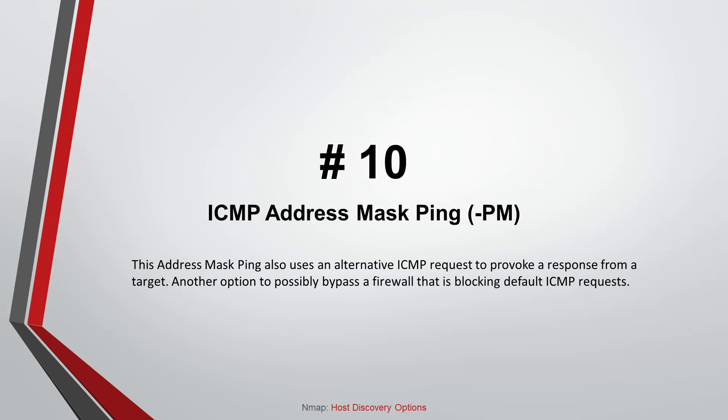Command number ten: ICMP Address Mask Ping. This address mask ping also uses an alternative ICMP request to provoke a response from a target — another option to possibly bypass a firewall that is blocking default ICMP requests.